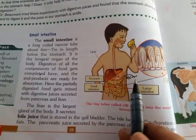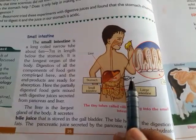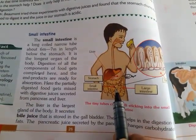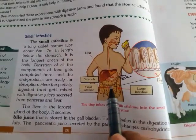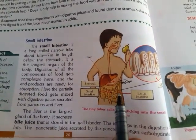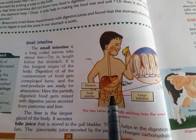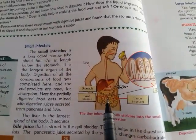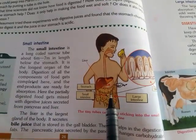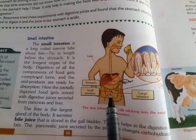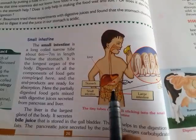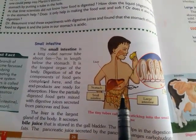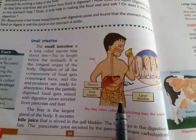Now what about the pancreatic juice? This pancreatic juice is secreted by the pancreas into the small intestine, gets mixed with the food, and then it digests the carbohydrates, fats, as well as proteins. In other words, it converts complex carbohydrates, proteins, and fats into their simple forms.